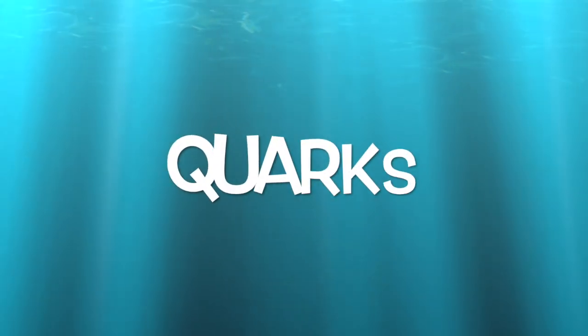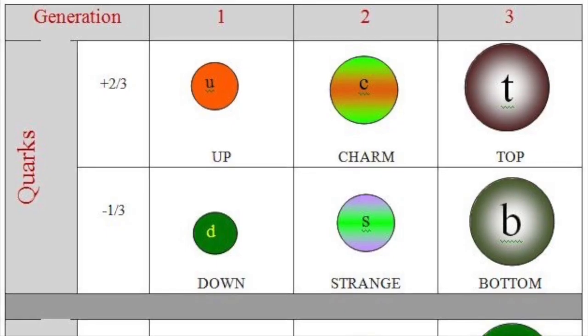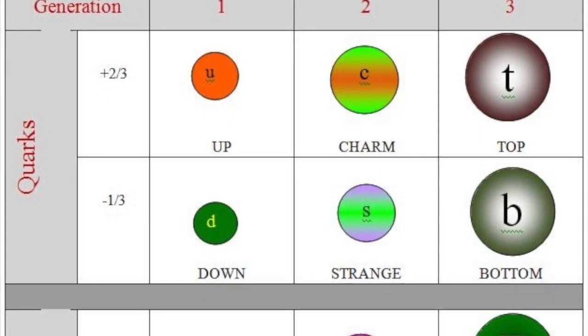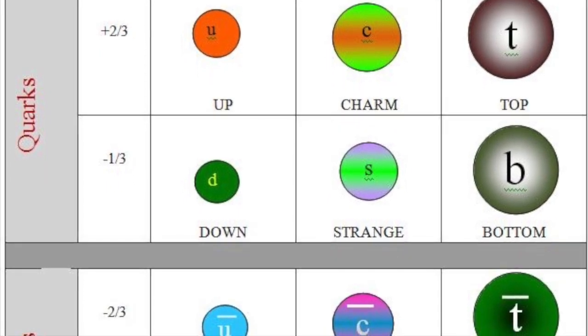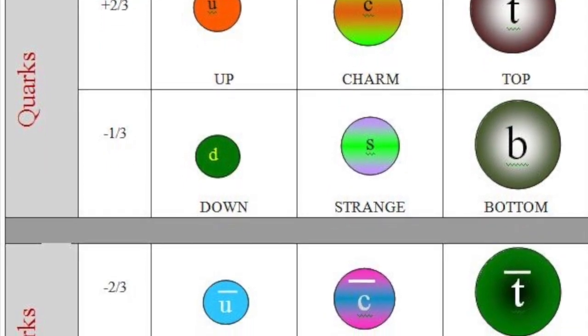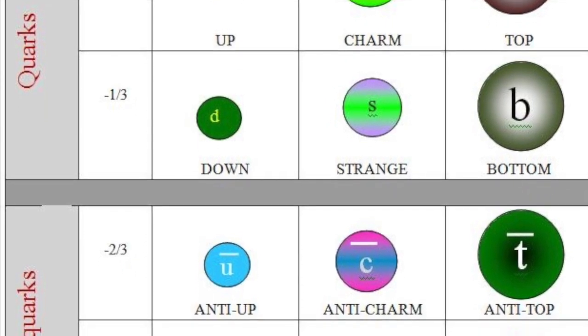Before we go further, let's first have a look at quarks. Quarks are divided into six flavors corresponding to three generations of matter. These flavors can be grouped in three pairs: up and down, charm and strange, top and bottom.